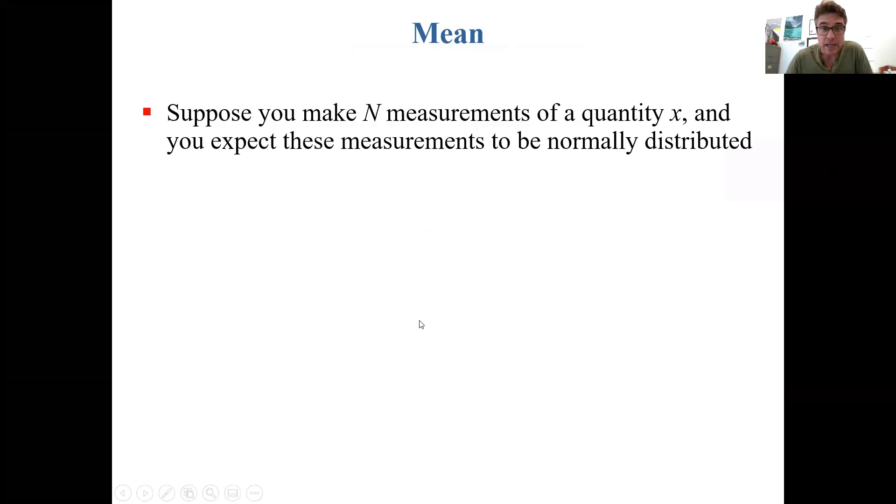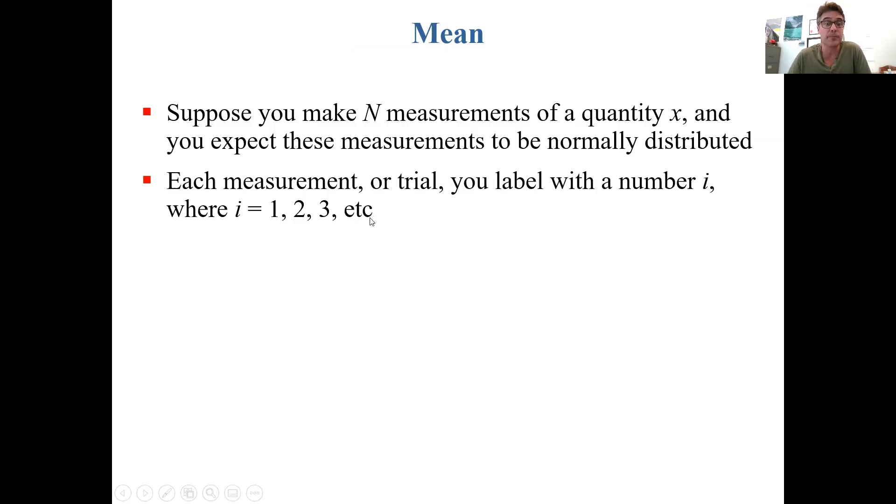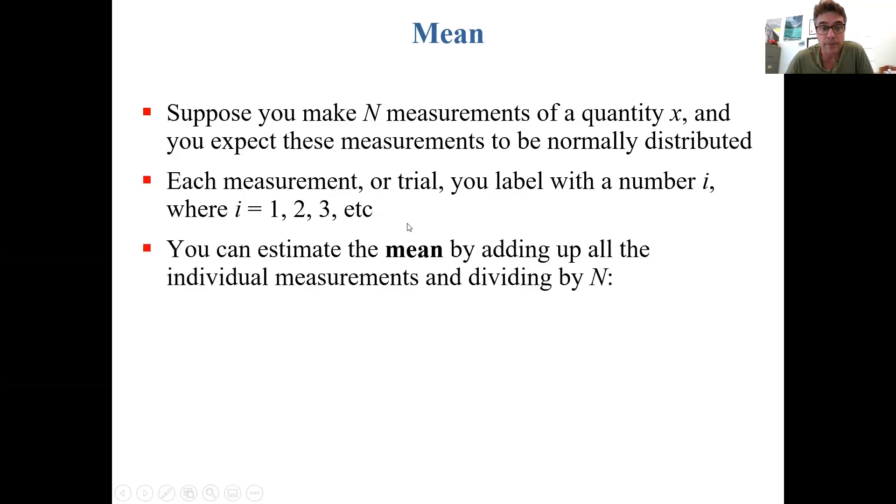Suppose you make n measurements of a quantity x and you expect these measurements to be normally distributed, meaning following a Gaussian distribution. Each measurement or trial you label with the number i, where i is 1, 2, 3, 4, etc. You can estimate the mean by adding up all the individual measurements and dividing by n. x bar, meaning the mean, is equal to 1 over n times the sum over all i of x sub i.